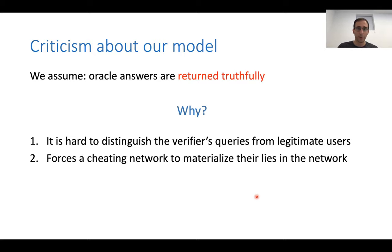Let me raise some immediate criticism about our model. So one thing we are assuming is that the Oracle answers are returned truthfully. And you can ask why, right? If you don't trust Facebook to give a report, then when you query the graph, they are the same ones that are giving you these answers or implementing this Oracle. So why do you trust the Oracle answers? And so those are reasons. First, it's very hard to distinguish between legitimate users' queries and verifiers' queries. So it'd be hard for Facebook to cheat in these answers only for us and not for other users. And this actually forces them to cheat, to materialize their cheat in the network itself. So if they want to cheat and claim that they have millions of users and they don't, they actually need to create these users and make them consistent in the network. And this possibly you could catch them later.